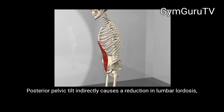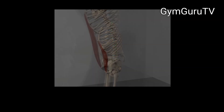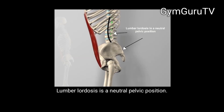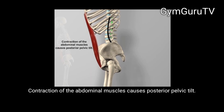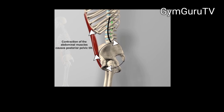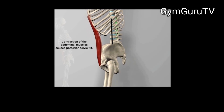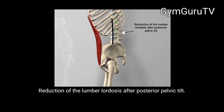Posterior pelvic tilt indirectly causes a reduction in lumbar lordosis. Lumbar lordosis is a neutral pelvic position. Contraction of the abdominal muscles causes posterior pelvic tilt, resulting in a reduction of lumbar lordosis after posterior pelvic tilt.